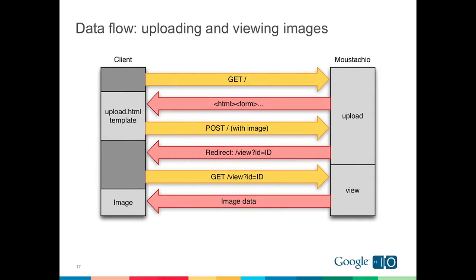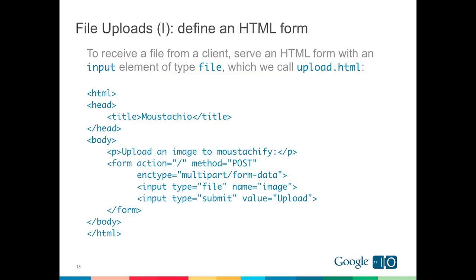The beginning of our Mustachio program will handle a file upload and show the image to the user. Initially, when the user visits Mustachio, they issue a GET request and the upload handler serves them a form with a file input field. The user posts an image back to the upload handler, which saves the image to disk, redirects them to slash-view with the image ID, and the view handler serves them the image data.